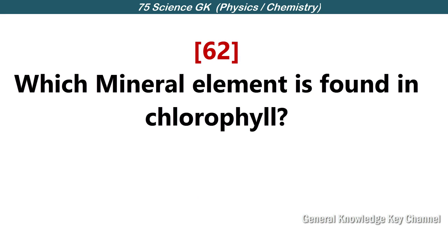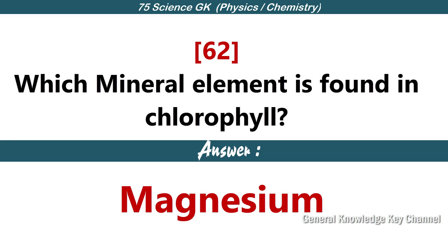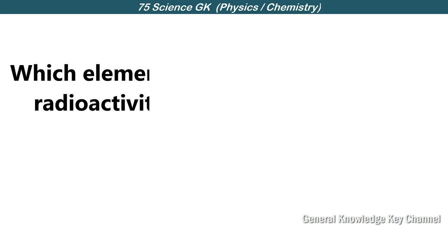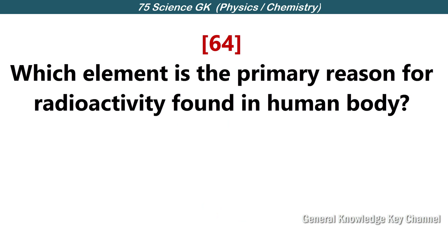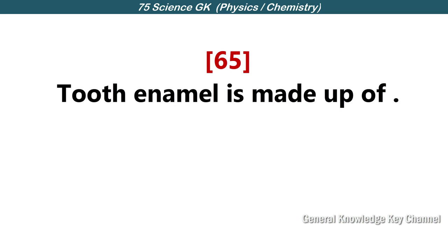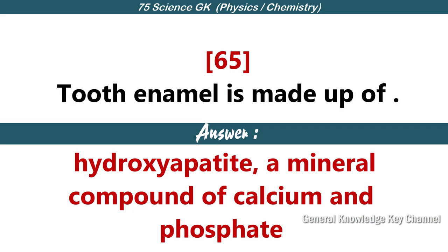Which mineral element is found in chlorophyll? Magnesium. The most abundant element in the earth's crust is oxygen. Which element is the primary reason for radioactivity found in the human body? Potassium-40. Which mineral is bone made up of? Hydroxyapatite — a mineral compound of calcium and phosphate.